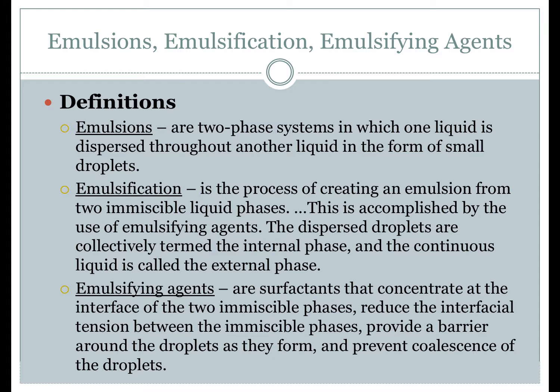Examples of miscible liquids include water mixed with alcohol, or olive oil mixed with cottonseed oil. Other liquid pairs, such as castor oil and alcohol, are said to be partially miscible, meaning they are soluble in each other but only in a definite proportion. Immiscible liquid pairs are liquids that are imperceptibly soluble in each other in any proportion — they simply do not mix. Examples include water and mineral oil, and alcohol and mineral oil.